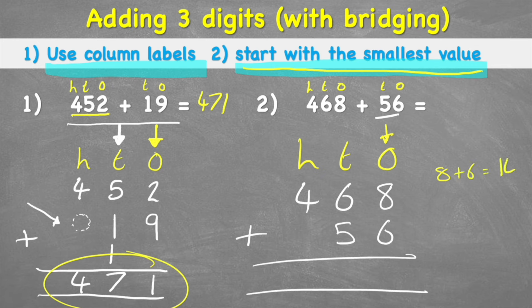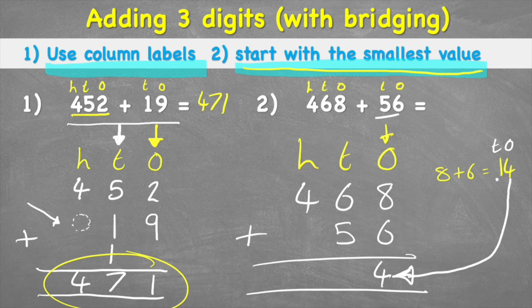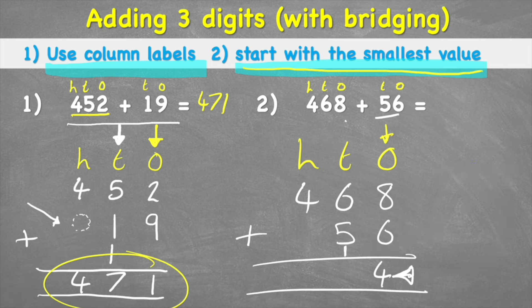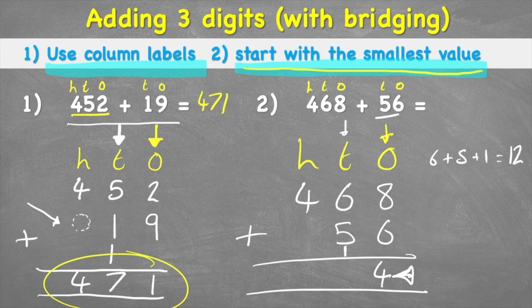Starting with the smallest value — the ones — I have eight plus six which equals 14. Again I have a two-digit number. Looking at 14, the four goes into the ones answer column and the one in the tens column goes down to the tens. Now in the tens column I have six plus five plus the carried one: six add five is 11, plus one equals 12. Again I have a two-digit answer.